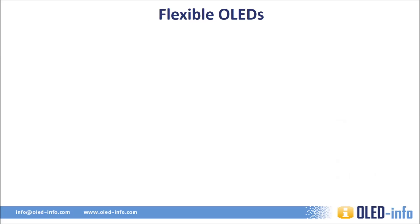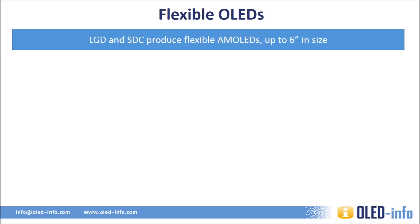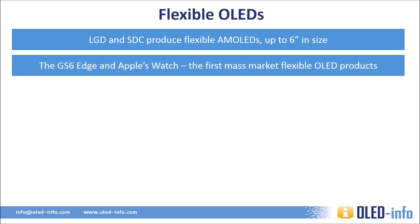Both LG and Samsung are currently mass-producing flexible plastic-based OLEDs, and the two Korean companies make displays up to 6 inch in size. In 2015, flexible AMOLEDs finally emerged into the real consumer market with two applications: Samsung's Galaxy S6 with its dual curved sides, and Apple's watch, which uses a flexible plastic-based OLED made by LG Display. Apple chose not to curve this OLED, which looks like a regular glass-based display, but it is thinner, lighter, and more efficient than comparable LCDs or glass OLEDs.